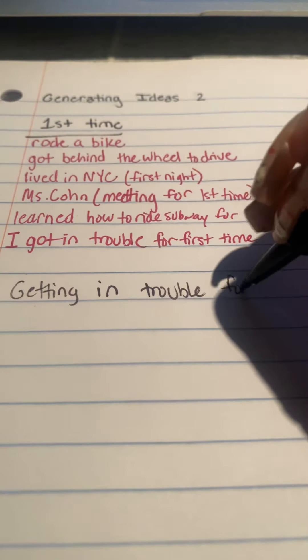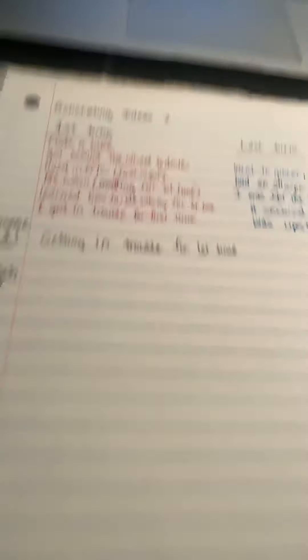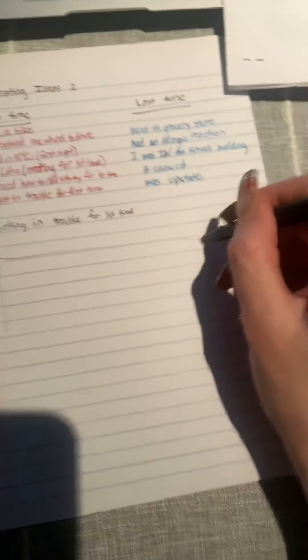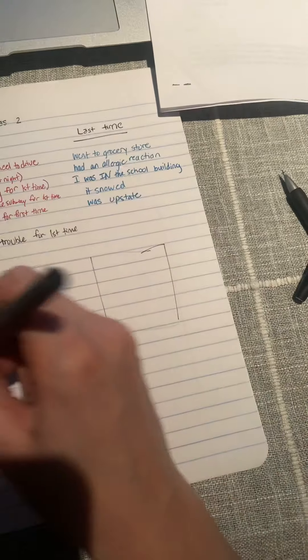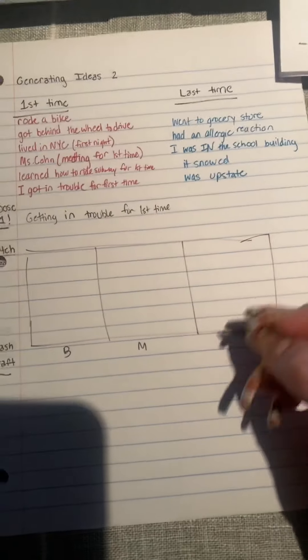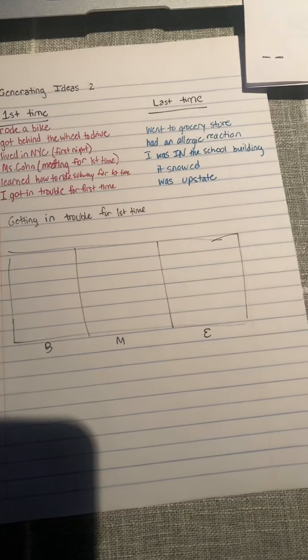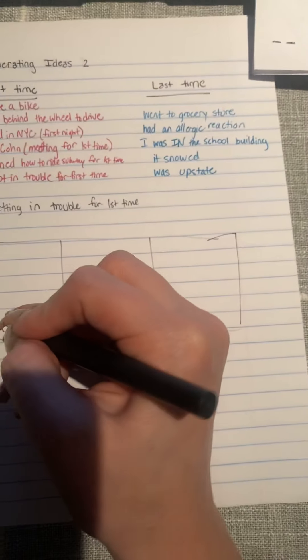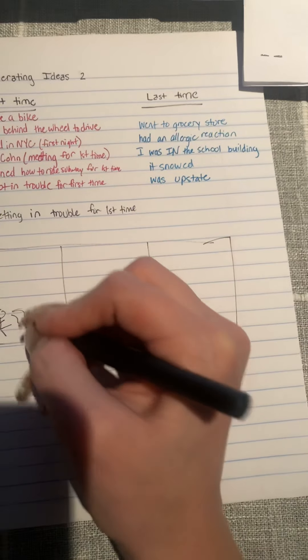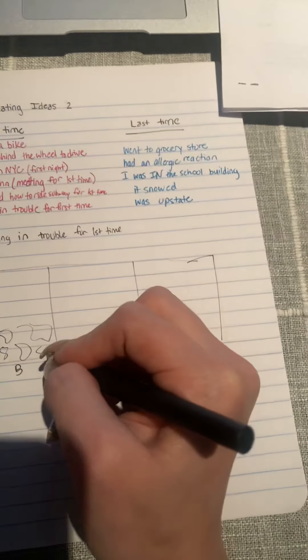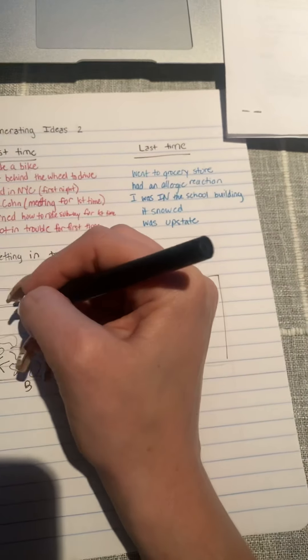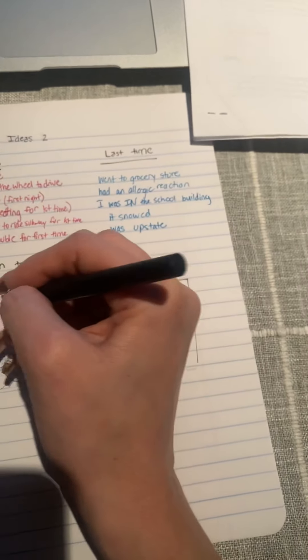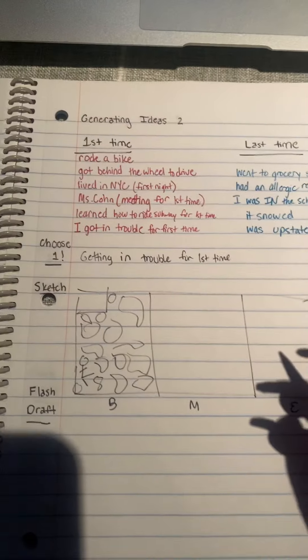And now I'm going to sketch it, same thing as yesterday, set up three boxes. My marker's not working so well. Beginning, middle, and end. So the beginning of the story, I was maybe five years old. So I could draw little me. I was sitting on the floor of my room, which was a mess. I couldn't walk anywhere. I didn't want to clean. I had all my toys out. My bed's over here. And I had a tiny room. So it was really, you couldn't see the carpet anywhere. So it's a mess.